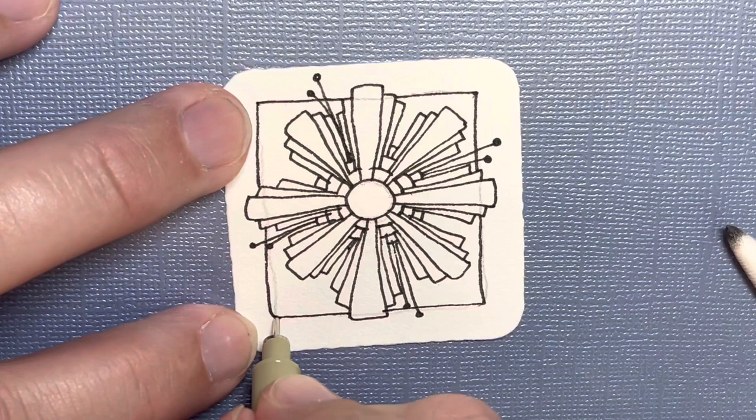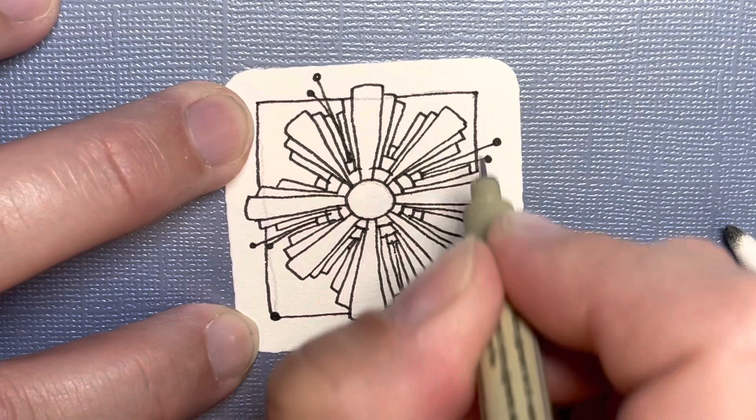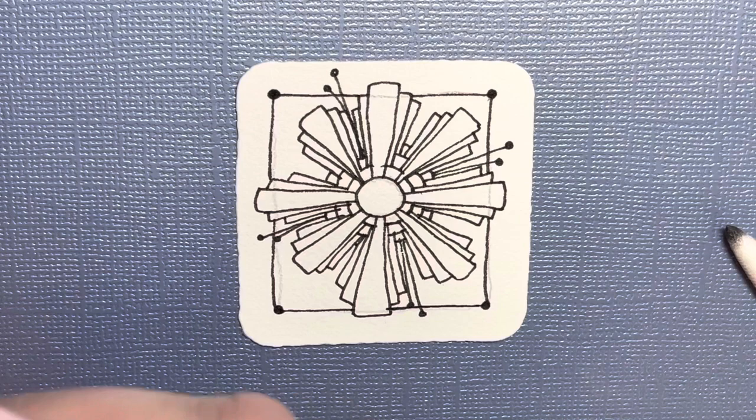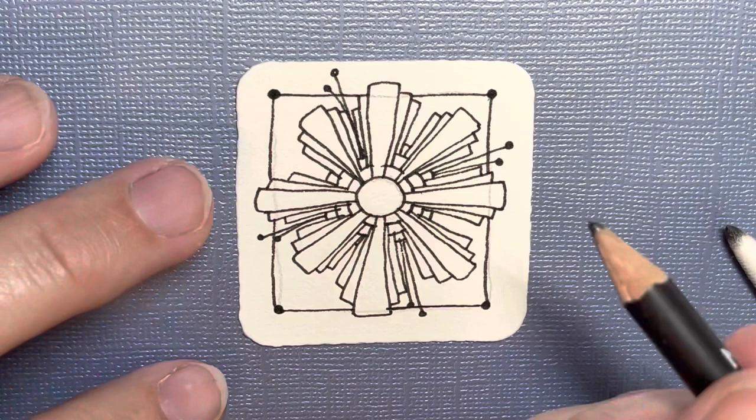And if I want, maybe I'll put some little black dots in the corner just to match those little spokes I have coming out. All right. I put my top on.